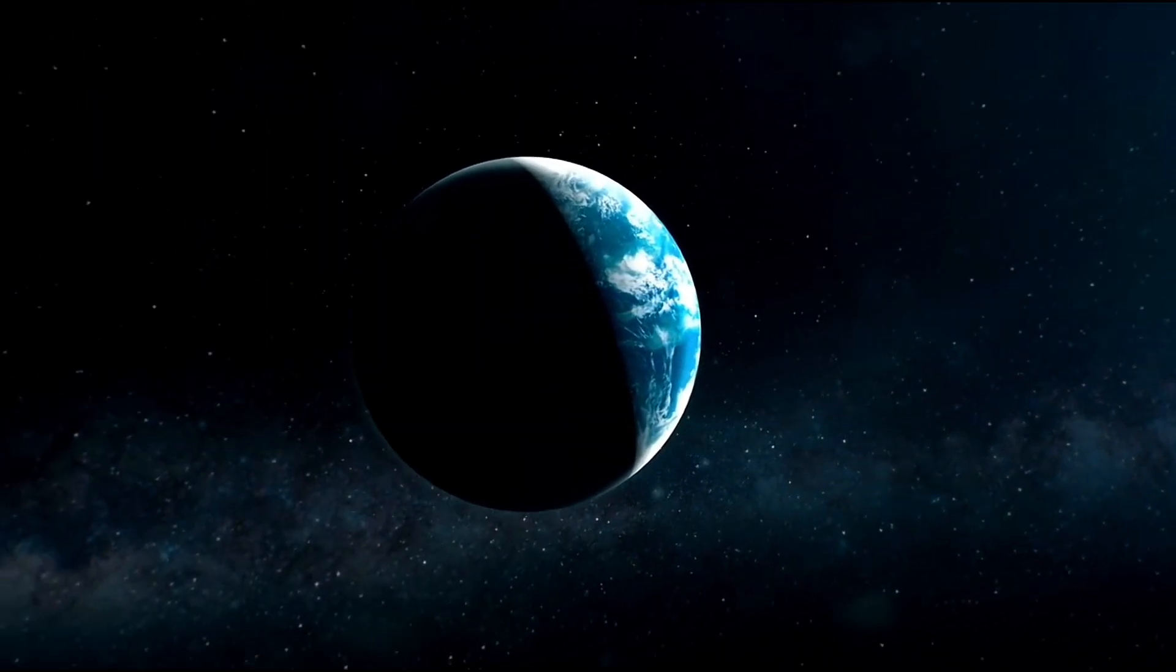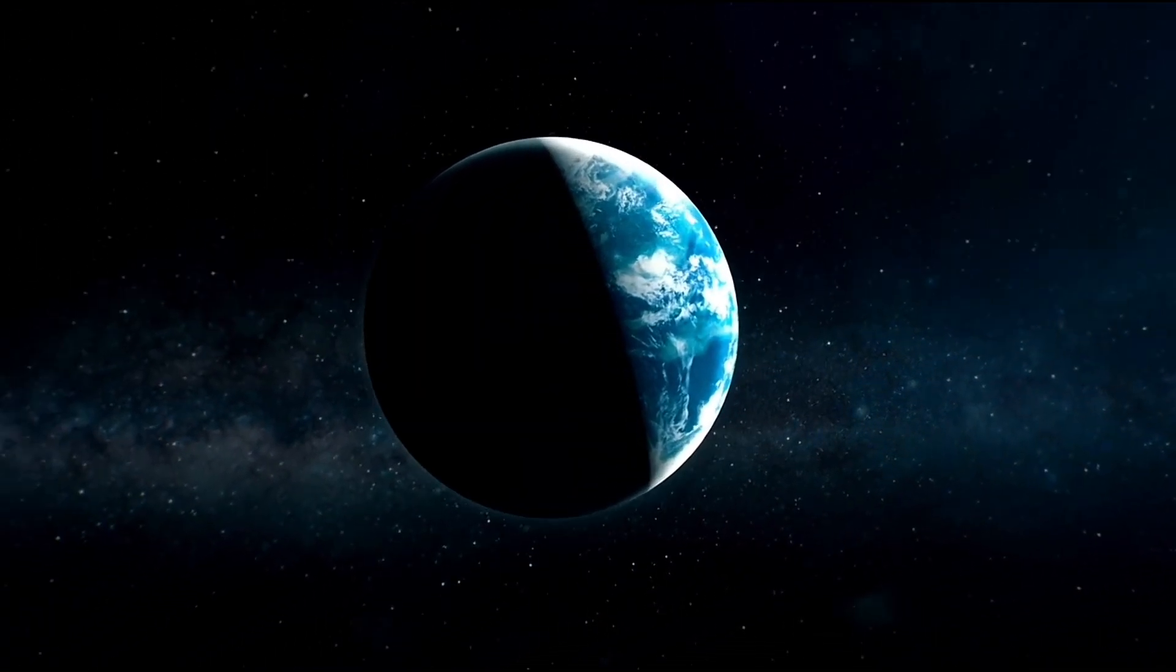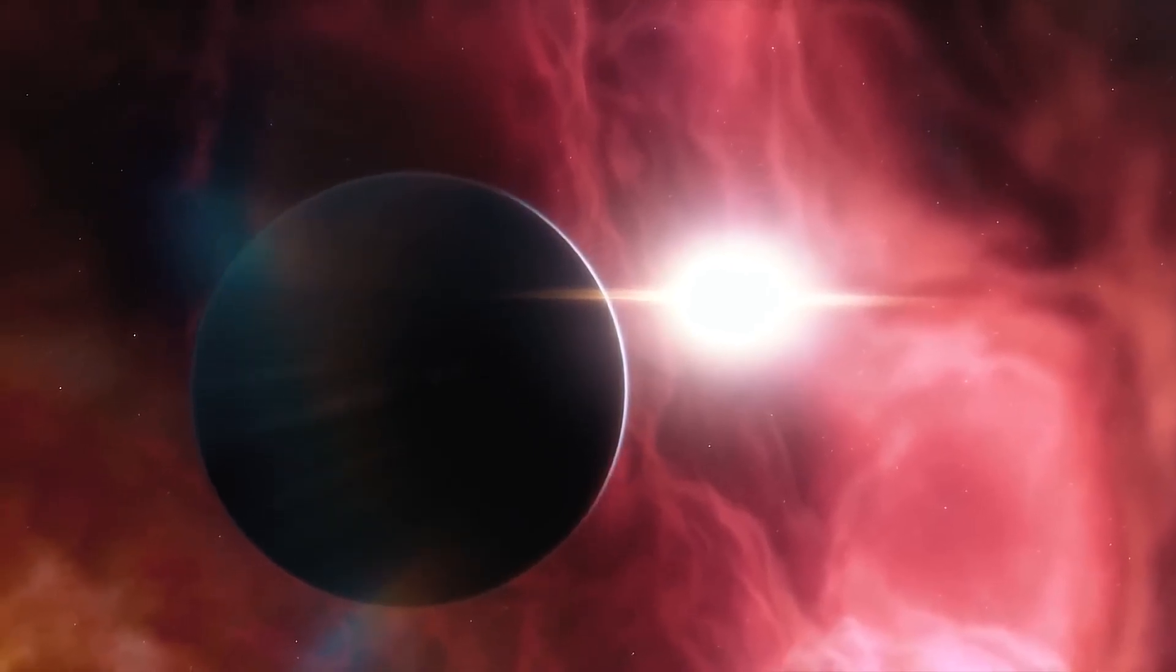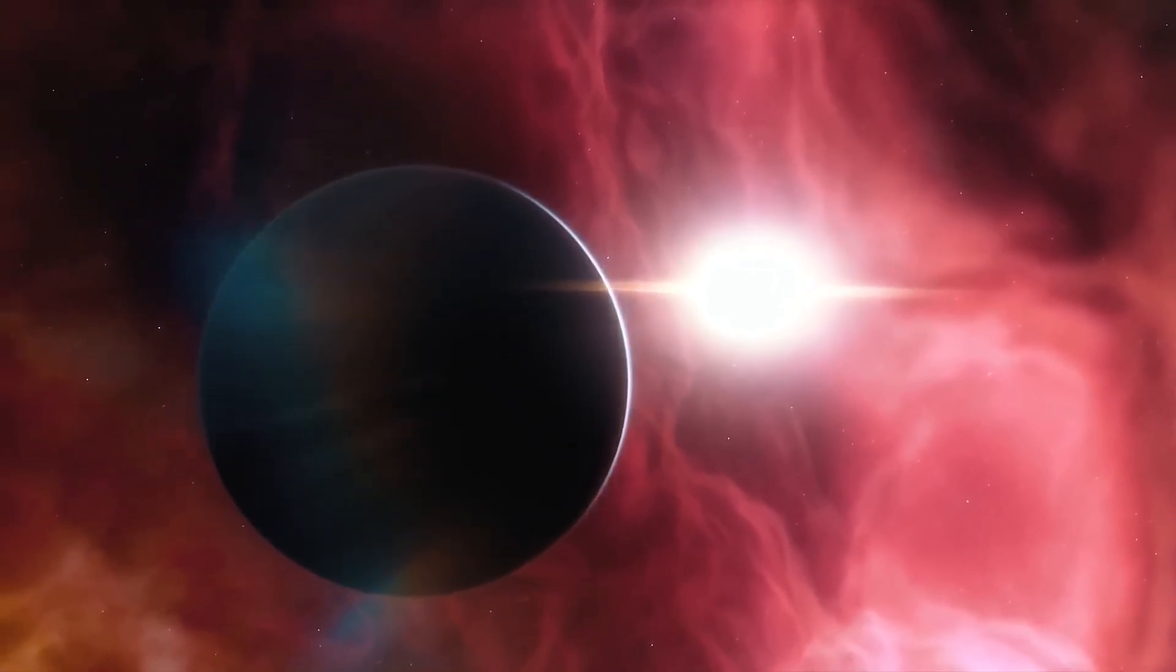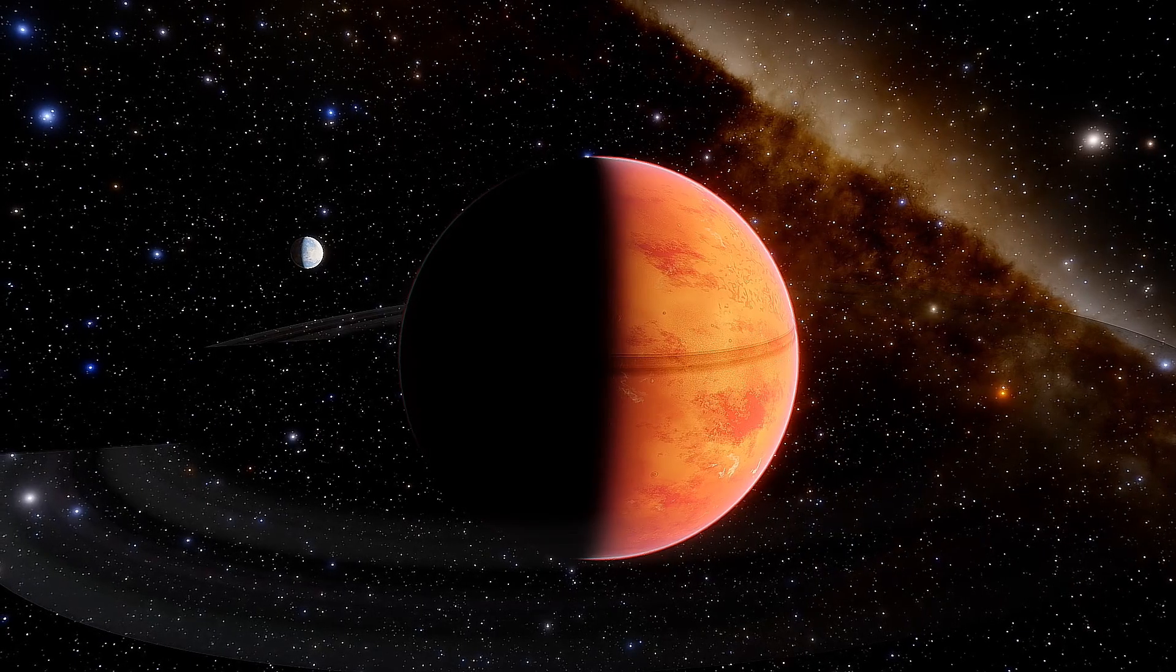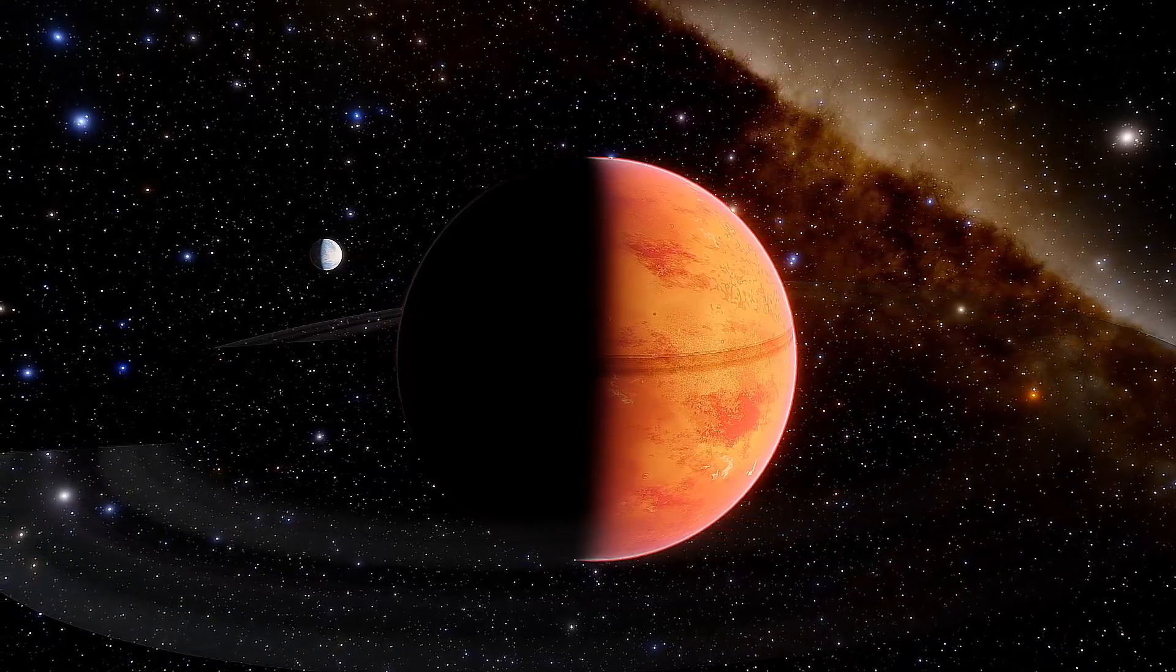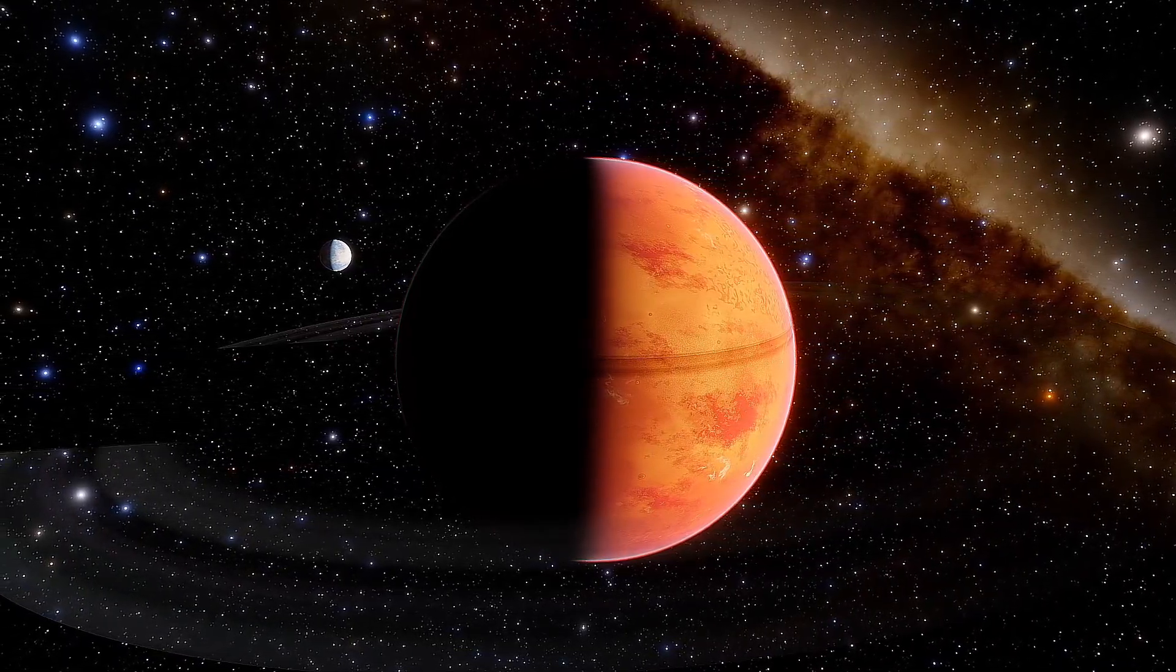But there's something else about Kepler-452b that makes it even more intriguing. The star it orbits is much older than our Sun, about 1.5 billion years older. That's a huge difference. Think about this. Life on Earth has changed so much over the past billion years.